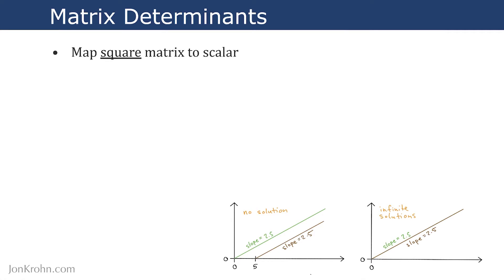Matrix determinants map a square matrix to a single special scalar value. So the key here is that we do need to have square matrices in order to calculate their determinant.